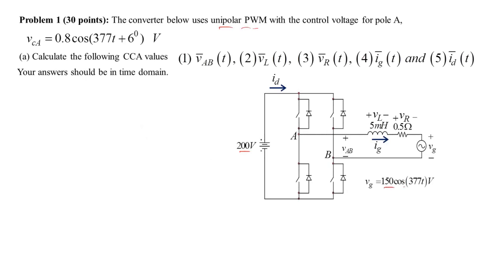The grid voltage is 150 cosine(2π·60·t). We are also given the filter inductance L and its resistance, and the control voltage Vca. For leg A it is given, so with unipolar PWM, Vcb would be the negative of this, and Vc(t) is the same as Vca(t). Part A asks us to calculate several cycle-by-cycle values of different parameters, the first being Vab at the output of the two-pole converter.